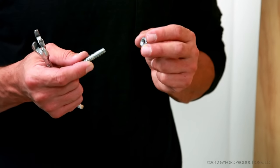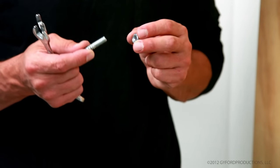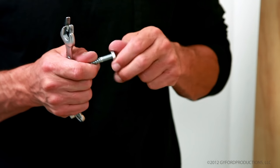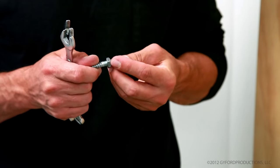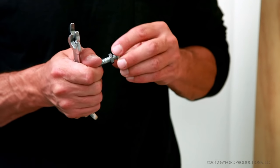We'll start by threading each jam nut onto the machine thread end. Now we'll bring them together. Keep them out near the end.